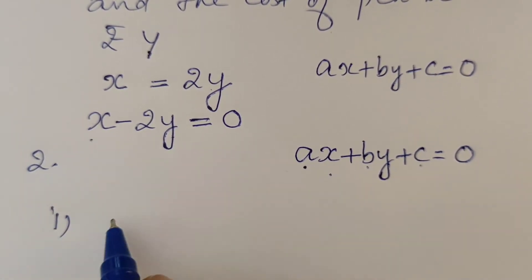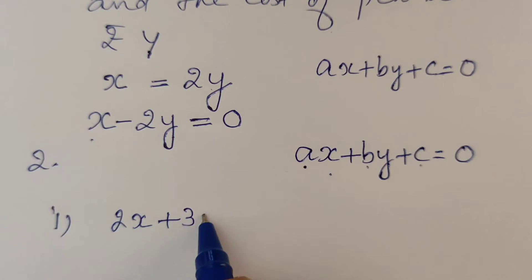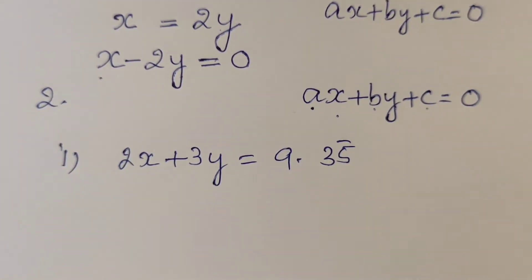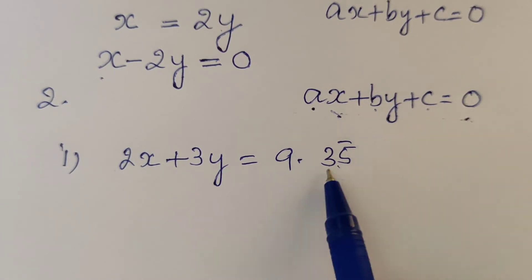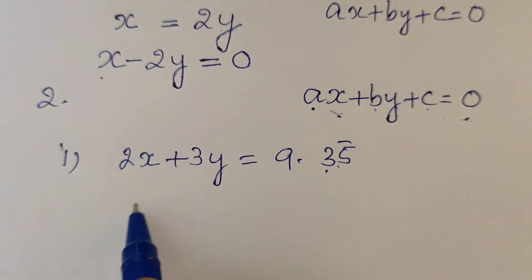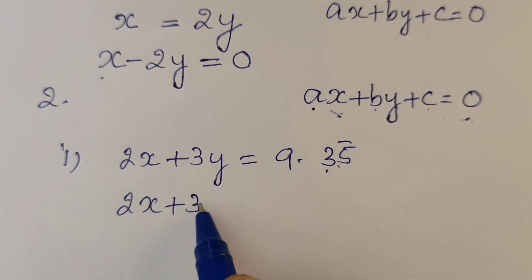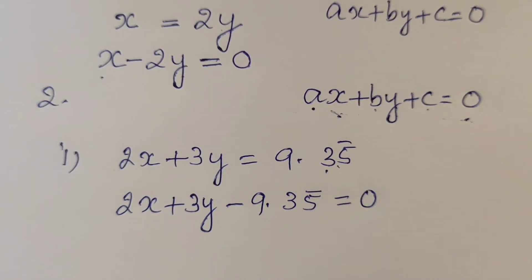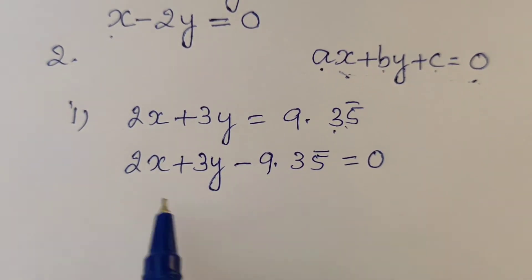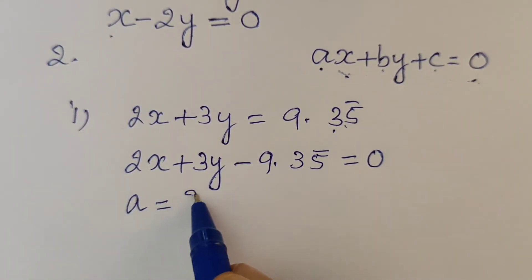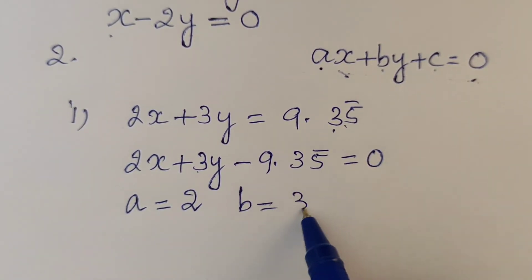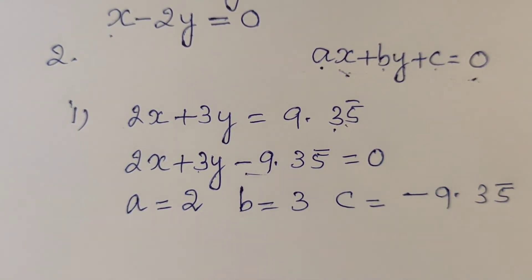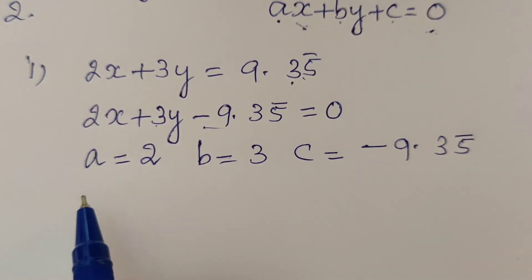Part (i): 2x plus 3y equals 9.35 bar. Transposing the constant term, we get 2x plus 3y minus 9.35 bar equal to 0. Here, a is the coefficient of x, which is 2; b is the coefficient of y, which is 3; and c is the constant term, which is negative 9.35 bar.